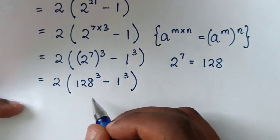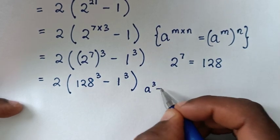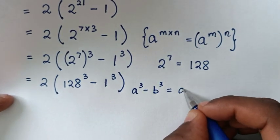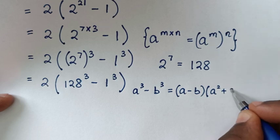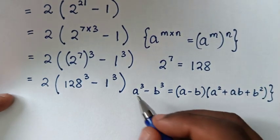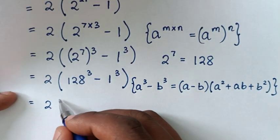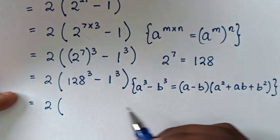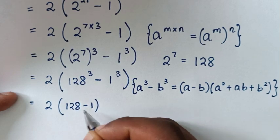The expression inside the bracket is in the form of a difference of cubes. We will apply the rule: a cubed minus b cubed equals a minus b, bracket, a squared plus a times b plus b squared, bracket. So it will be equal to 2 bracket, applying this form, a minus b gives us 128 minus 1.